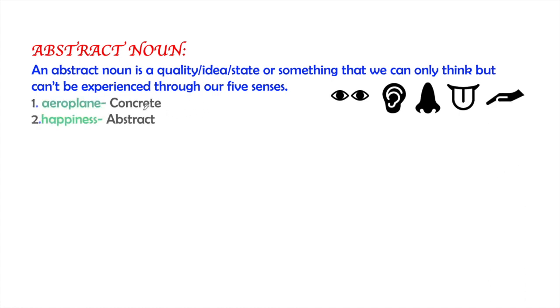For example, if we talk about an aeroplane, aeroplane is a concrete noun because it can be seen. So we are using one of our five senses. But happiness can only be felt. It cannot be experienced through these five senses. So this is the basic difference between concrete and abstract nouns.